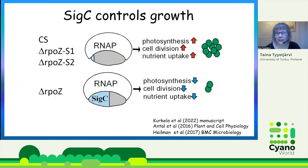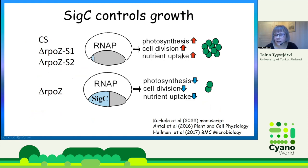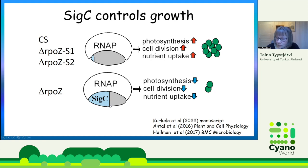What we think happens is that in the control strain and both suppressor mutant strains, cells recruit only a low amount of SigC, so photosynthetic genes, cell division genes, and nutrient uptake genes are highly upregulated and cells grow fast. Whereas in the Delta-RPOZ strain, an abnormally high amount of RNA polymerase holoenzyme is made with SigC, and because of this, photosynthetic genes, cell division genes, and nutrient uptake genes are downregulated.